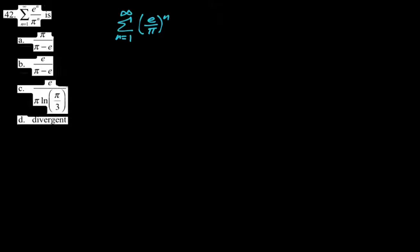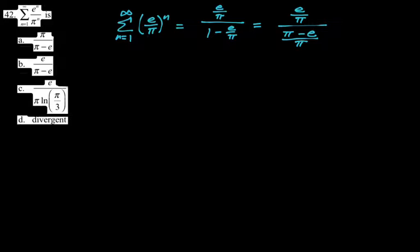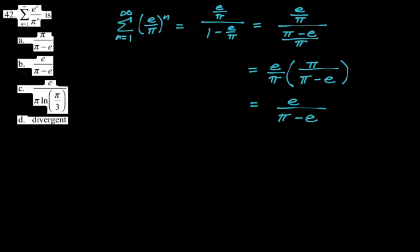The sum from 1 to infinity of e^n over π^n. E is less than π, so this is geometric with R = e/π. I'm going to rewrite it as the sum from 1 to infinity of (e/π)^n. The sum is (e/π) over (1 minus e/π), which cleans up to e over (π minus e). So the answer is B.